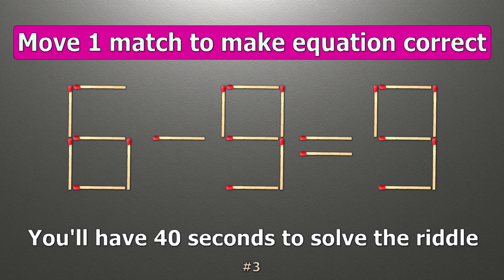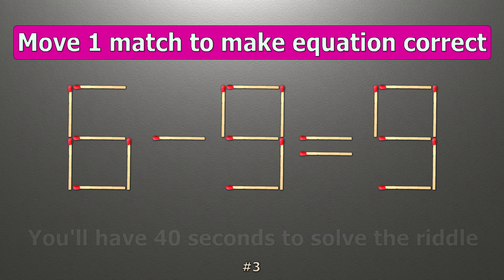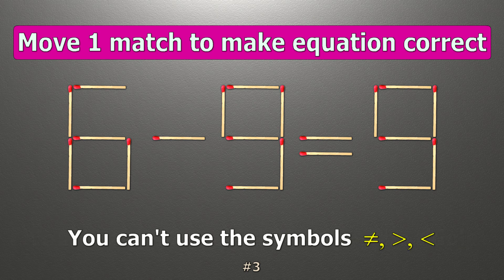We have the equality 6 minus 9 equals 9. Our equality is wrong. We need to move one match to make our equality correct.